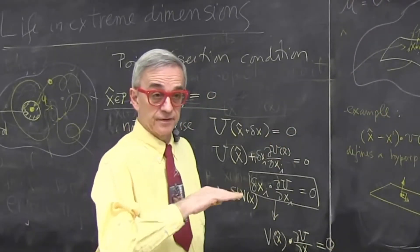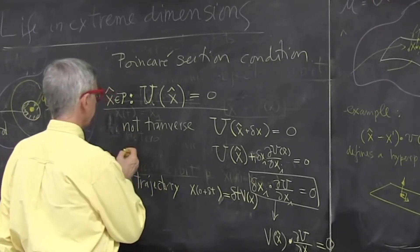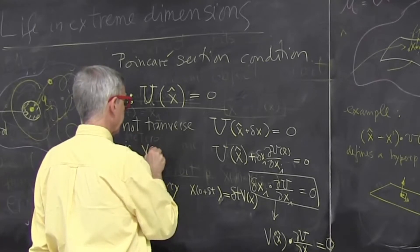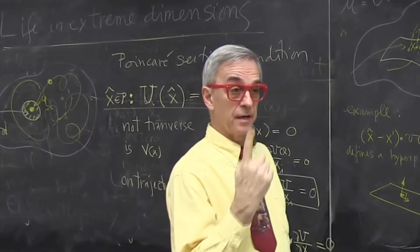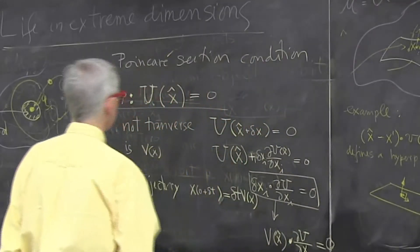And that clearly makes sense because the gradient is proportional to the surface normal to the surface, the velocity vector is something that's tangent to my trajectory, because that's how I get it by integrating it. And if they're at 90 degrees, I will be in the surface.